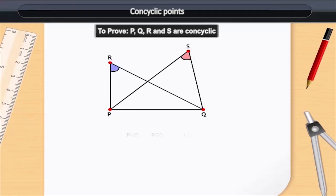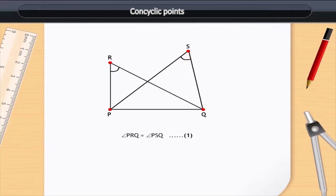Now, it is given that angle PRQ is equal to angle PSQ. Let us assume that we can draw a circle intersecting points P, Q and R. But, in reality, it does not intersect point S.